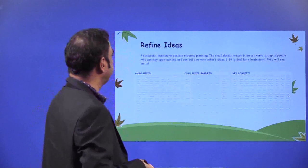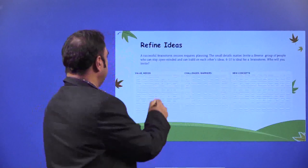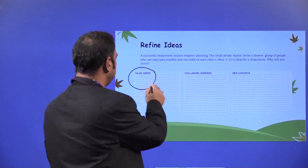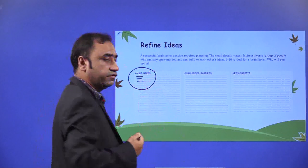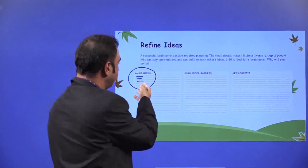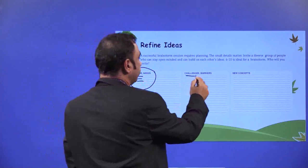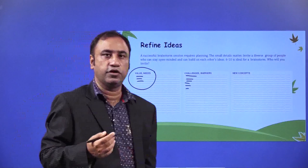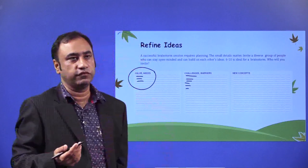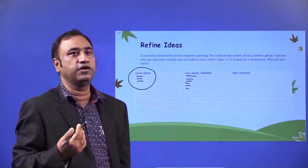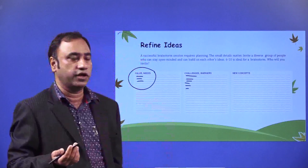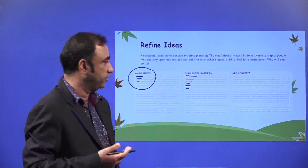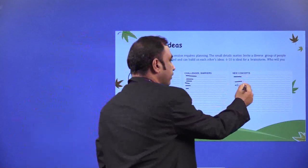Refine your ideas. A successful brainstorm session requires planning. Now you are going to refine your thought processes for which you have already got some answers. What are the value needs — what are people valuing and what is their need? Define all those values and needs. What are the challenges people are facing, what are the barriers they are facing? For example, in online classes — what are the challenges schools were facing when the pandemic just started? They started thinking about those challenges and barriers and came out with the solution of online classes. Depending upon the need and how you can address it, identify what the challenges and barriers are and what new concept comes out of the entire discussion.